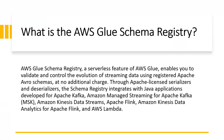What is the AWS Glue Schema Registry? The AWS Glue Schema Registry is a serverless feature of AWS Glue. It enables us to validate and control the evolution of streaming data using registered Apache Avro schemas at no additional charge. Through serializers and deserializers, the Schema Registry integrates with Java applications developed for Apache Kafka, Amazon Managed Streaming for Apache Kafka, Amazon Kinesis Data Streams, Apache Flink and Amazon Kinesis Data Analytics for Apache Flink. When data streaming applications are integrated with the Schema Registry, we can improve data quality and safeguard against unexpected changes using compatibility checks that govern schema evolution.